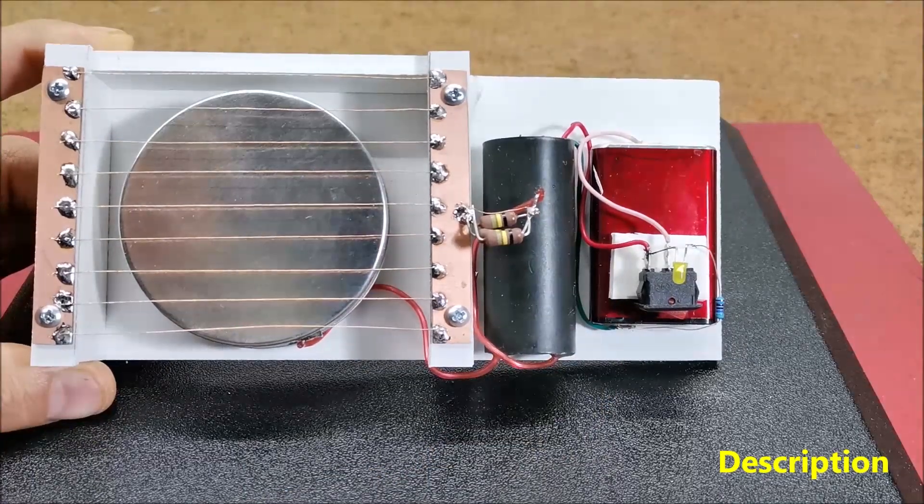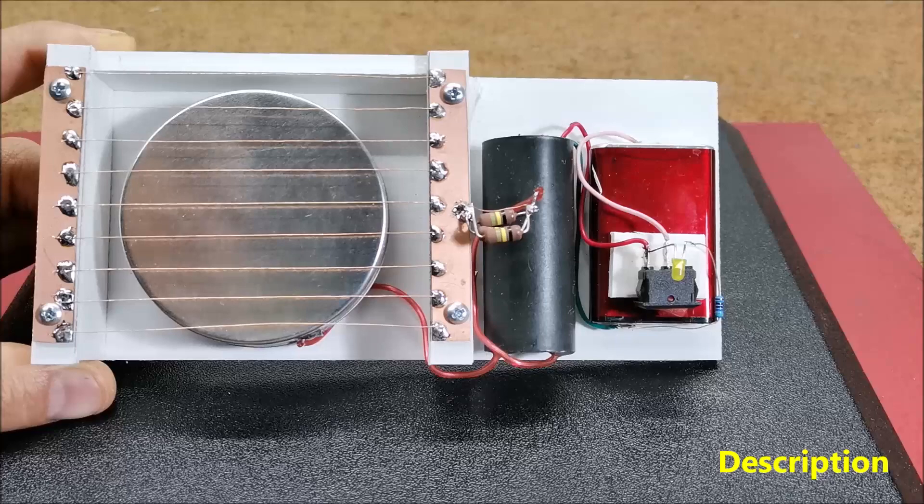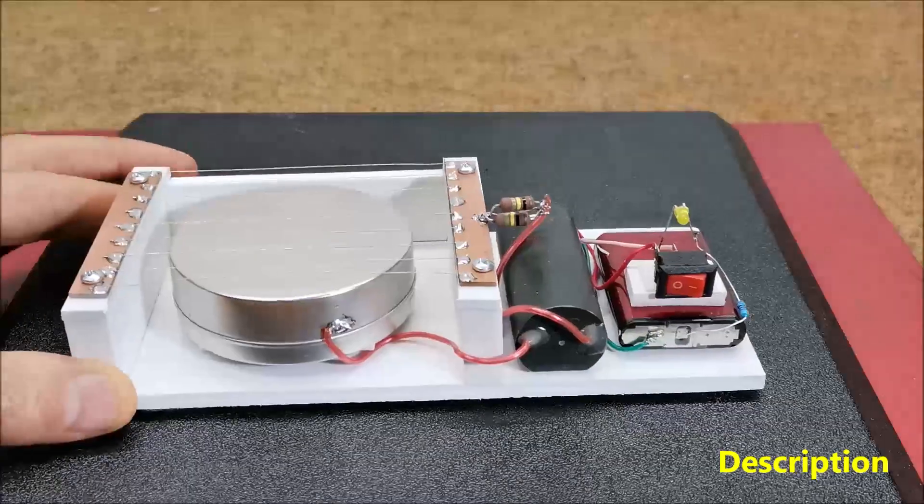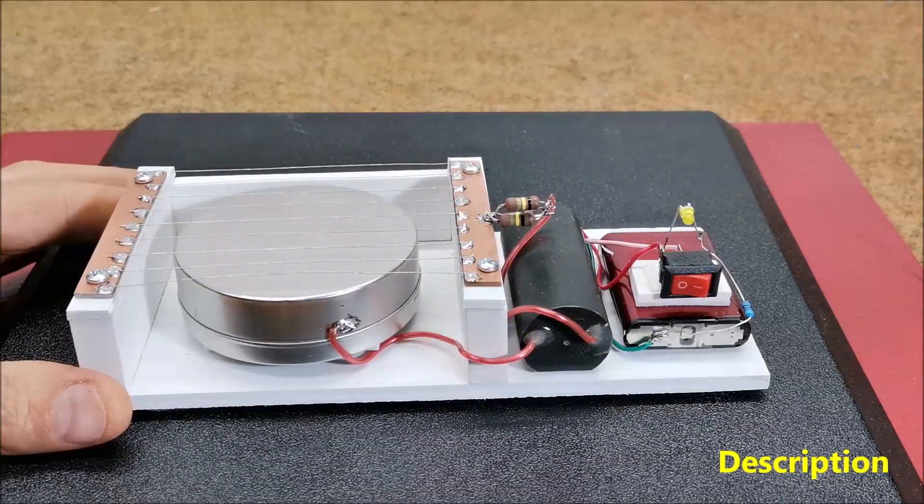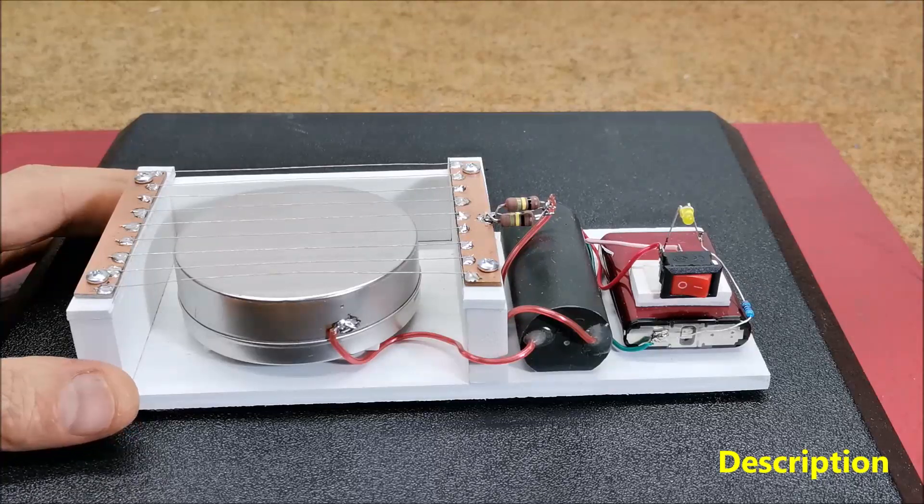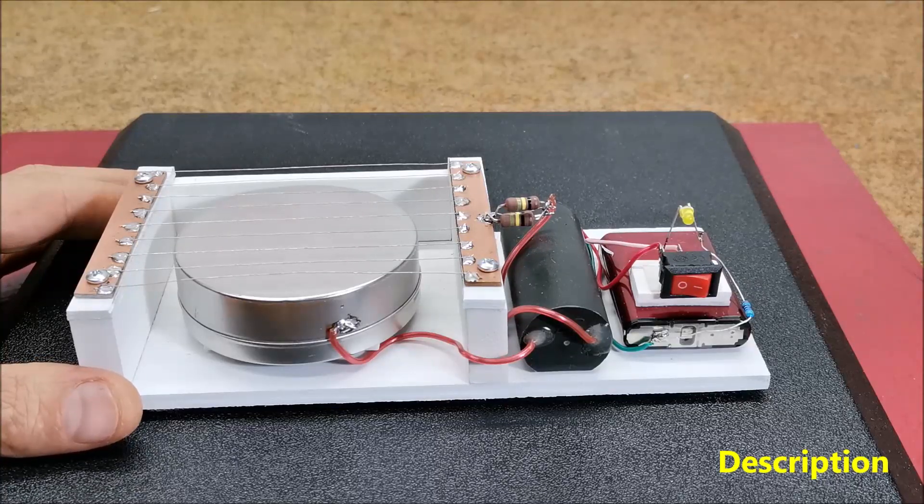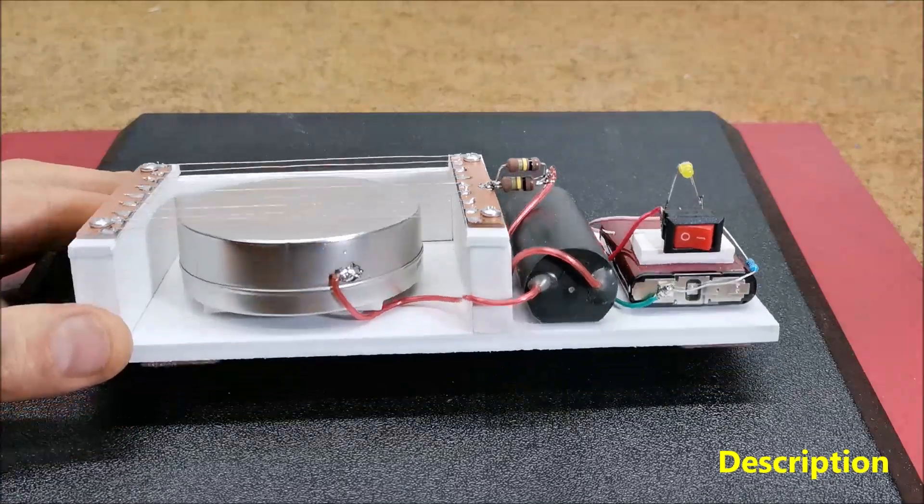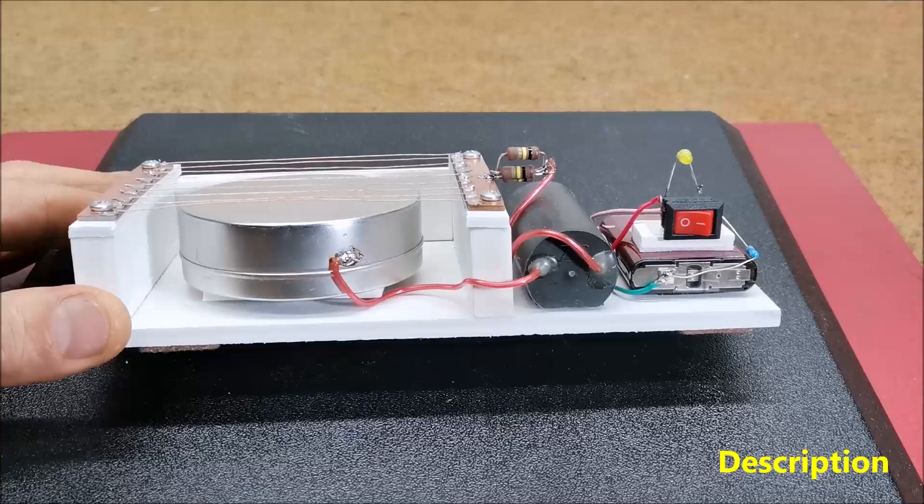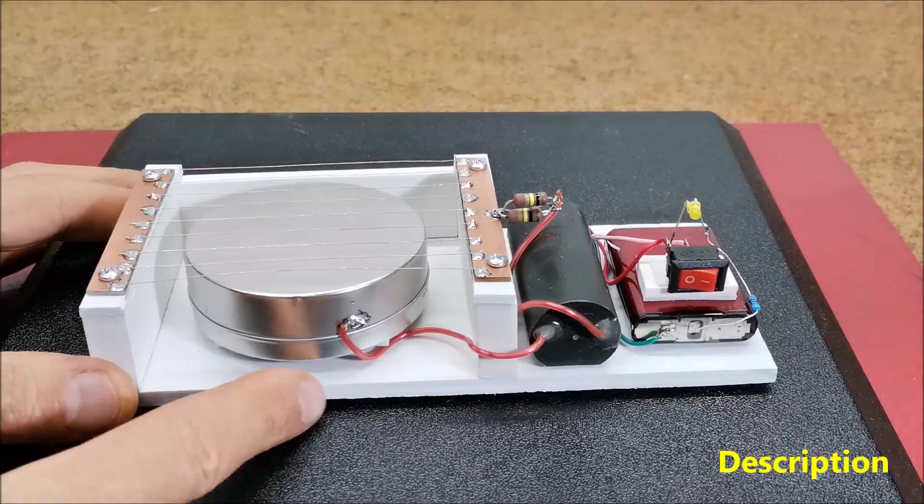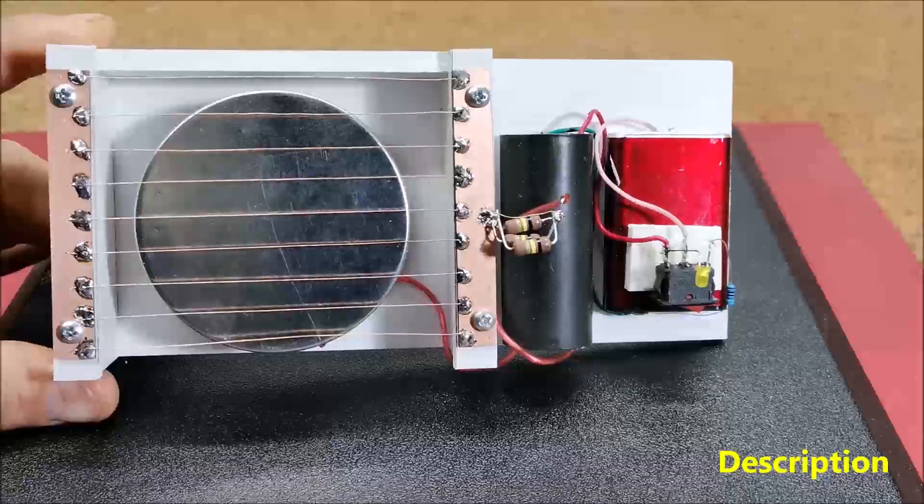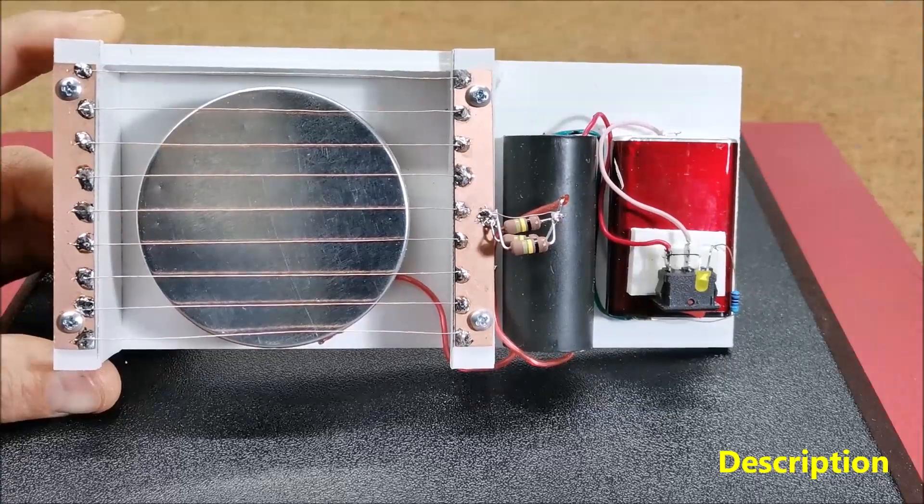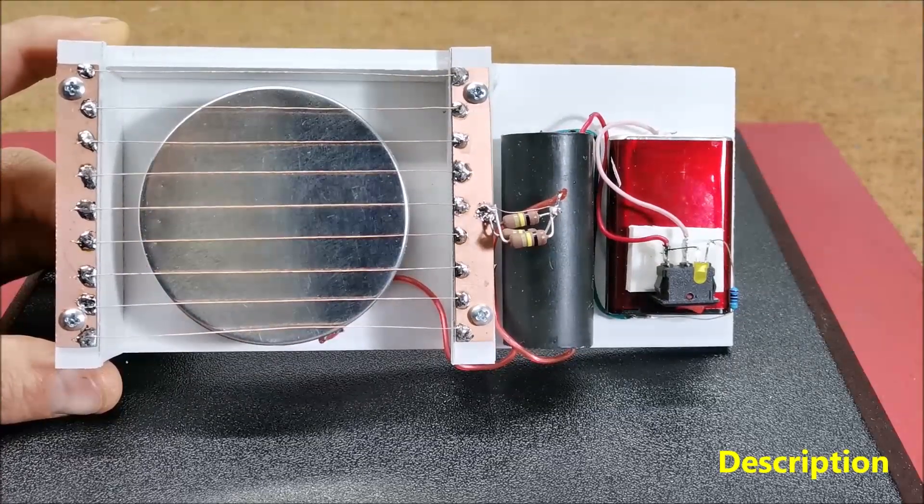This detector only responds to alpha particles and has no beta or gamma sensitivity at all. Alpha particles are the most ionizing, being much more massive than beta particles or X-ray and gamma ray photons, so they easily ionize the air between the wires and the other electrodes. The lower electrode anode is desirable to have no sharp edges as in this case to avoid the so-called leakage of electricity.